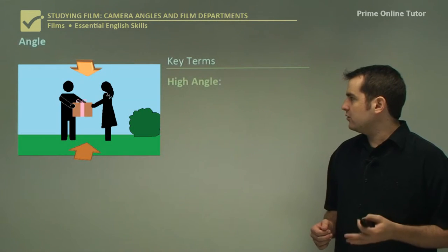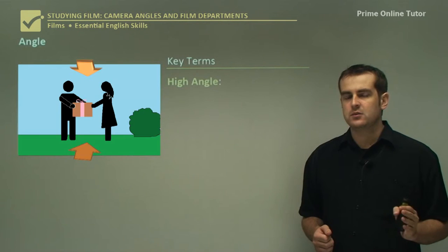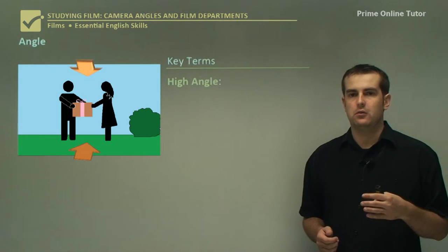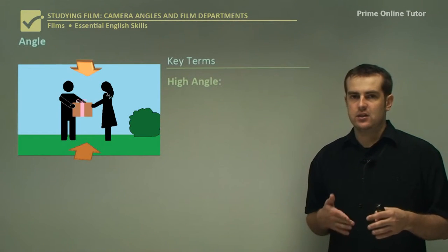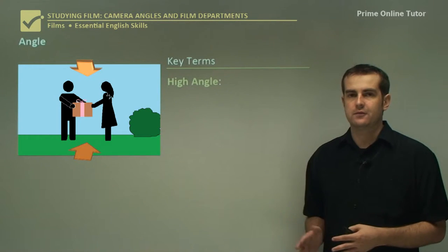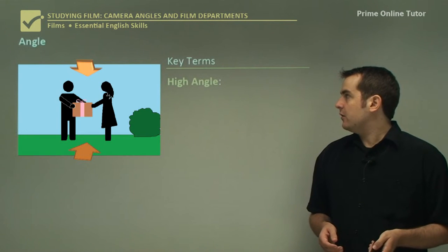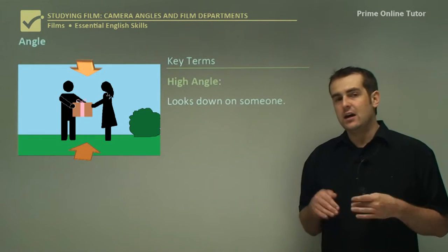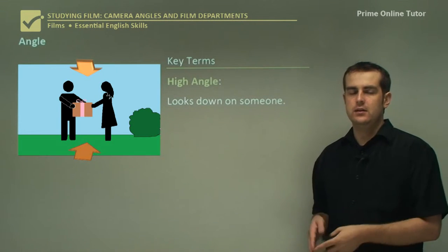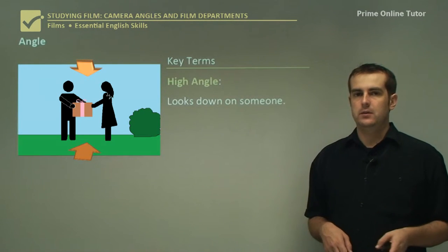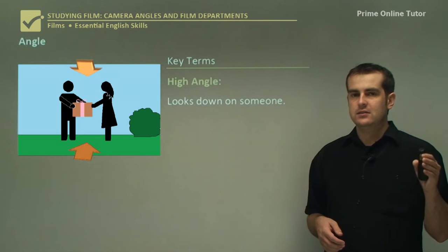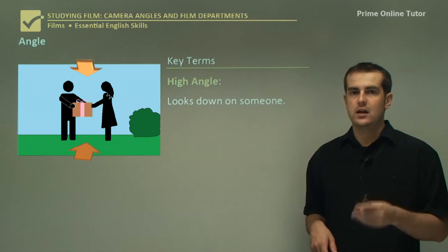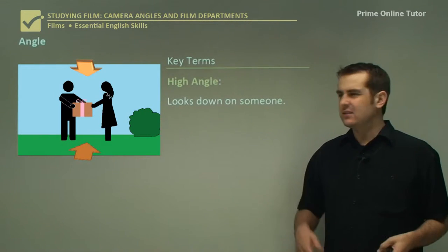Now let's look at angles. Angles is basically where the camera is positioned in terms of its angle to the subject — mainly we're looking at high and low. A high angle shot looks down on someone, and it basically makes the audience feel more powerful than the person on screen, sort of belittling them. So if someone is sitting on a throne looking down on you, that person would appear more powerful, and that's pretty much the same effect with a high angle shot.